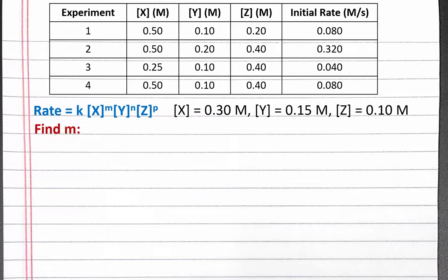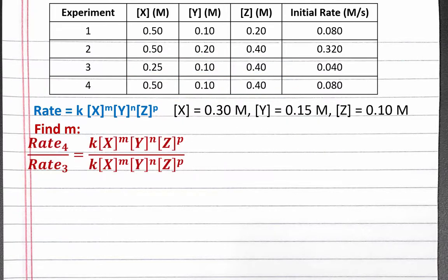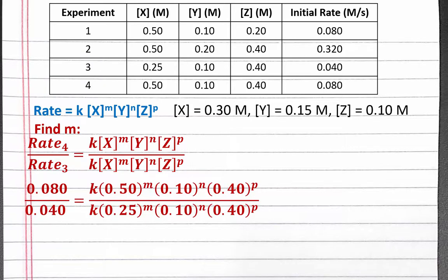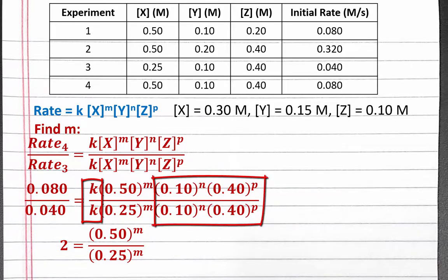We'll first find m. If we look at the starting concentrations in our table, in experiments 3 and 4, the only initial concentration that changes is the concentration of X. So we'll write out the ratio of the rate law substituting in our values for reactions 3 and 4. If we plug in our values from the table, we see that on the left side of the equation, our initial rate has doubled going from experiment 3 to 4. On the right side of the equation, the rate constant cancels out, and so does the initial concentrations of Y and Z.